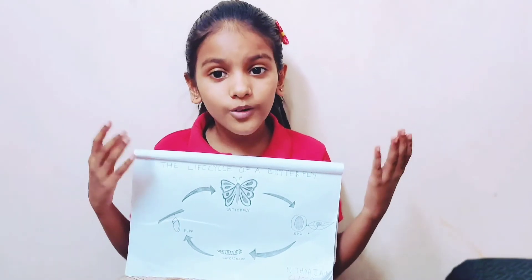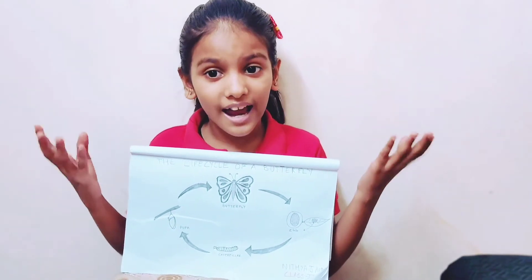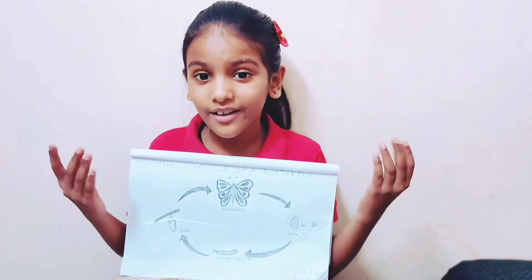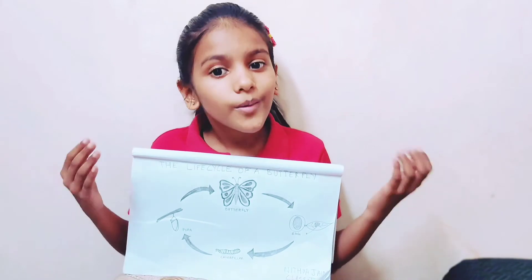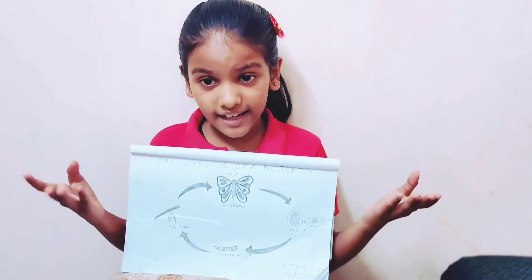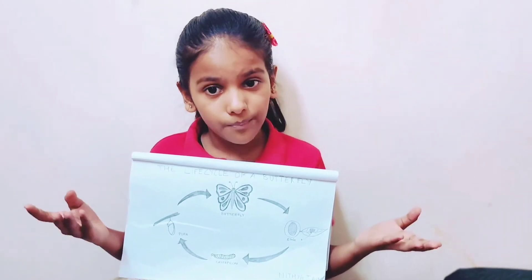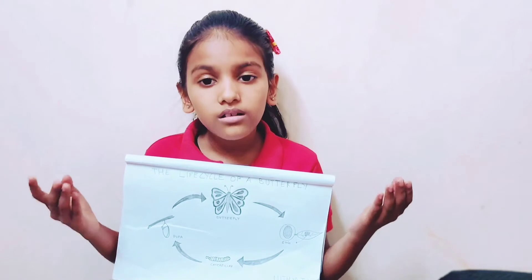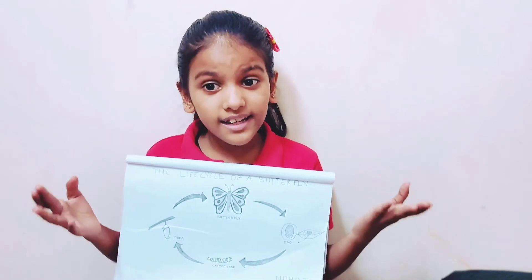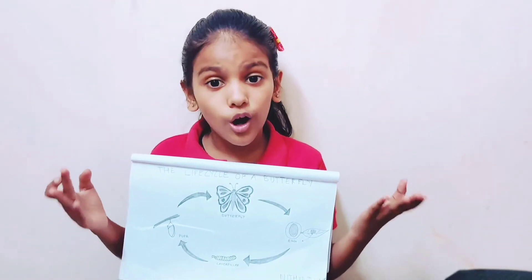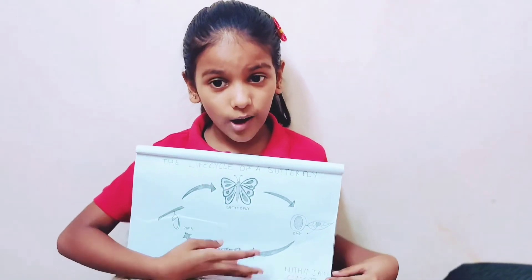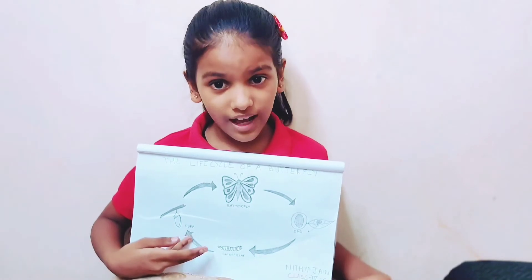A cocoon is a kind of protective layer. At this stage, it is called a pupa. It is the resting stage of the life cycle of a butterfly.